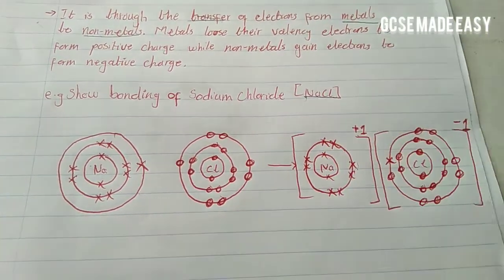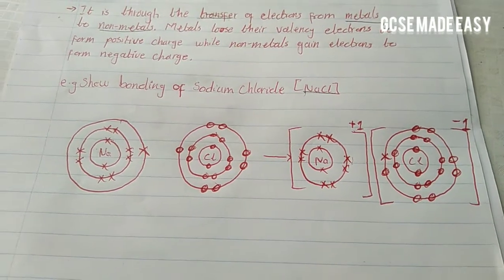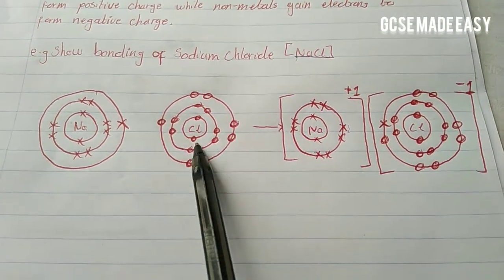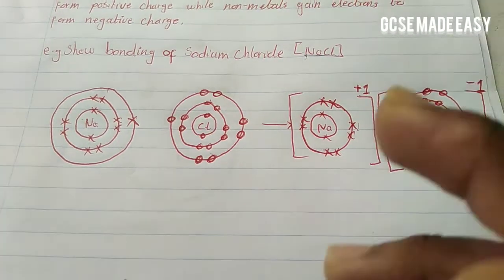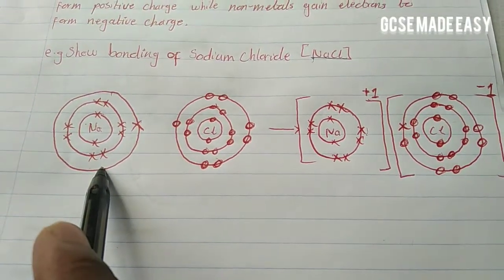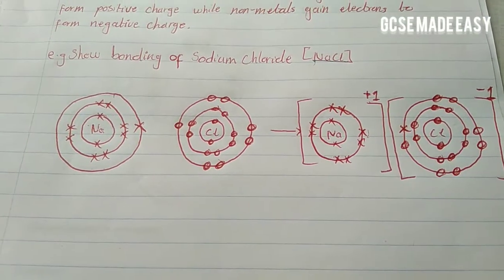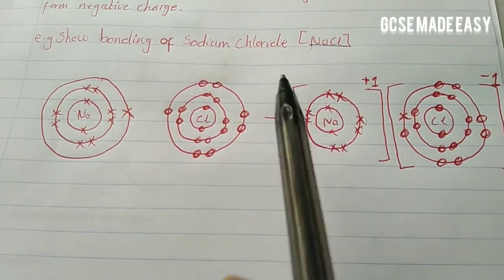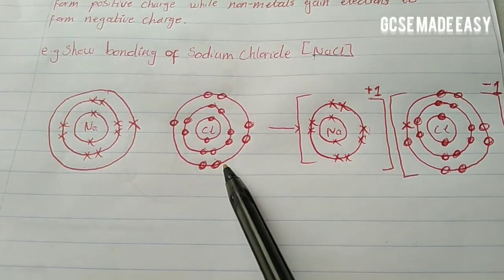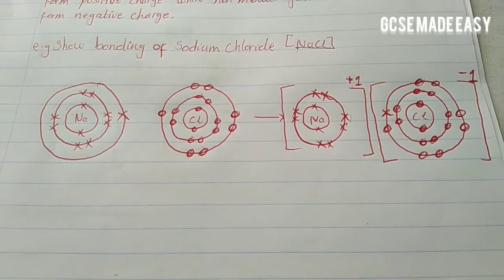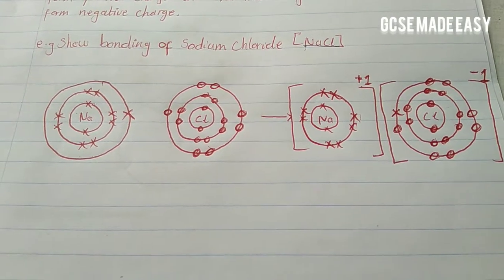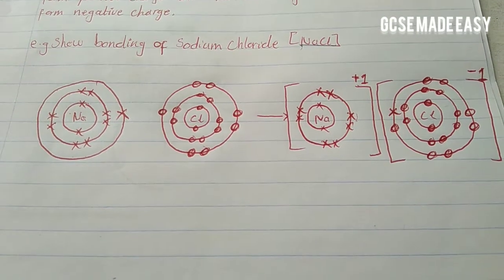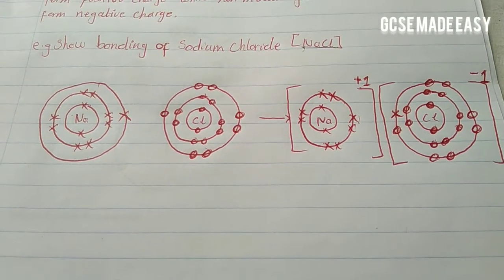We are going to demonstrate this with the formation of sodium chloride — the table salt that we use at home. We have the atomic structure of sodium and the atomic structure of chlorine. Metals have valency electrons of less than four, while those with valency electrons of more than four belong to nonmetals. One reason bonding takes place is for an atom to obtain an octet configuration — when the valency shell is completely filled with eight electrons.